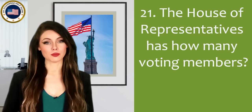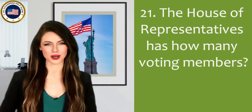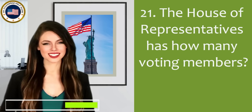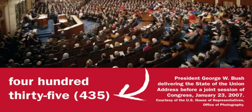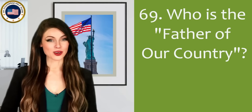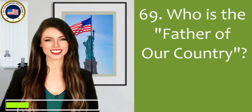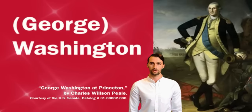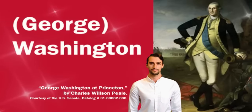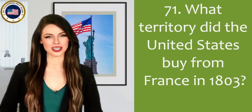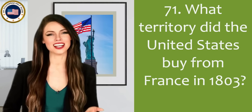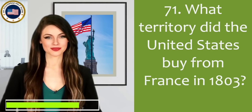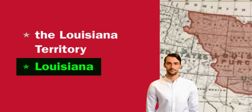The House of Representatives has how many voting members? 435. Who is the father of our country? What territory did the U.S. buy from France in 1803? Louisiana.